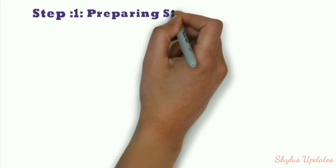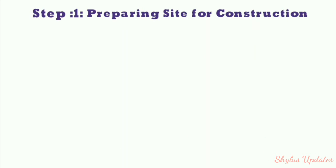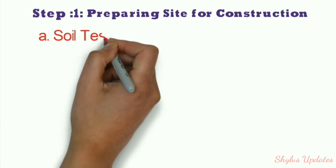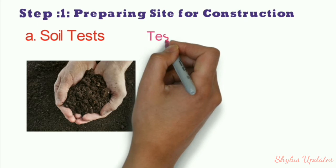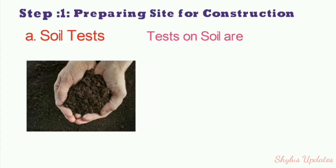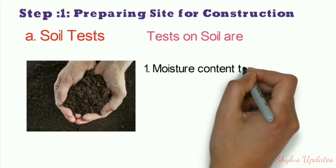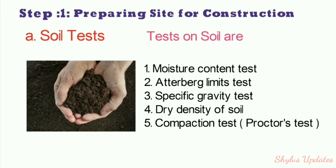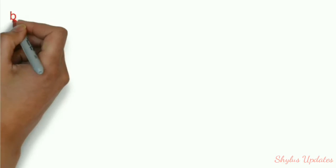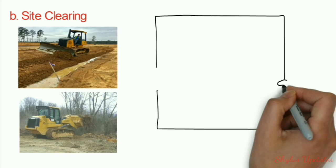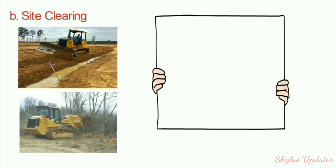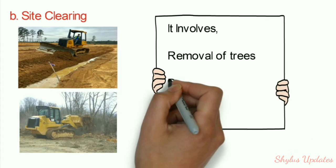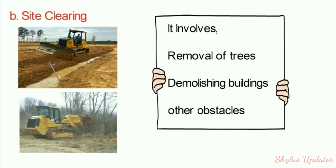Building construction Step 1: Preparing the site for construction. This involves soil testing. Tests on soil include moisture content test, Atterberg limits test, specific gravity test, dry density of soil, and compaction test (Proctor's test). Site clearing involves removal of trees, demolition of buildings, and removal of other obstacles.